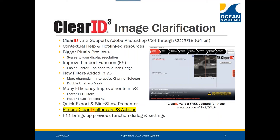Another hotkey introduced with 3.3 is F11, which brings up your previous function and dialogue settings. So if you had just applied a particular function and want to go back and apply it again, F11 brings up the same filter function and settings. Clear ID will also be able to be applied to smart objects. We'll show you that capability and discuss Clear ID 3.4, which we intend to have out very shortly.